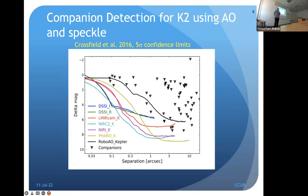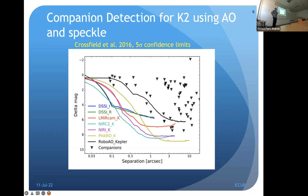This plot compares speckle imaging with our Dssi camera against other high-resolution instruments at different telescopes — including Robo-AO at Kitt Peak, a 2.1 meter telescope converted to a robotic adaptive optics system searching for companions. From the Crossfield et al. 2016 paper, typical detection limit plots are shown for each instrument. The key point is that speckle, although a much older technique than adaptive optics, is highly competitive with these others at large apertures.